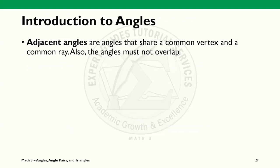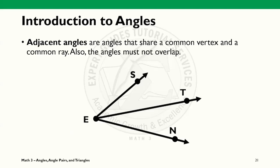We now define our first angle relationship, the adjacent angles. These are angles that share a common vertex and a common ray. Also, by definition, the angles should not overlap. We can see here in the example that the adjacent angles are angle SET and angle TEN.